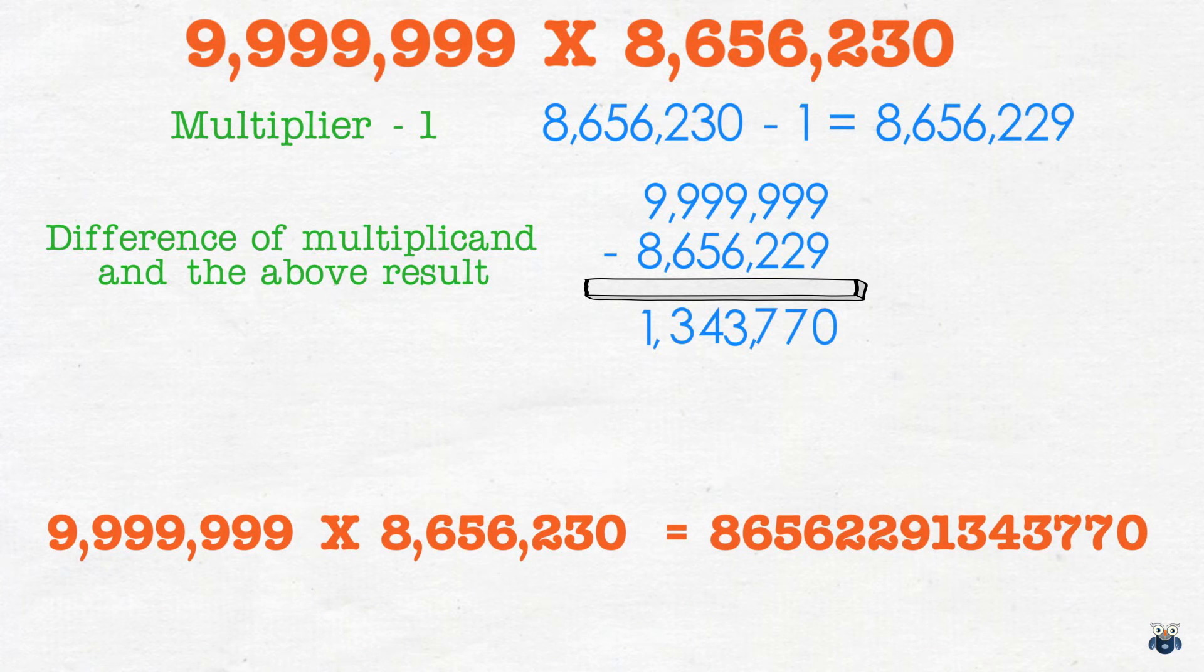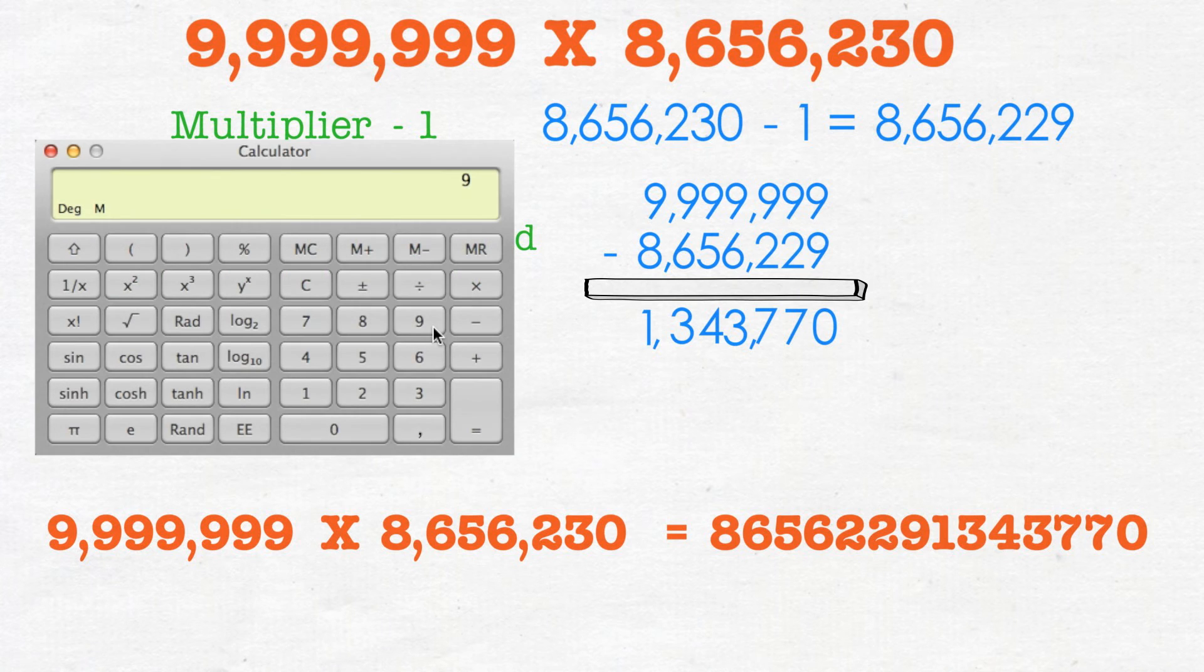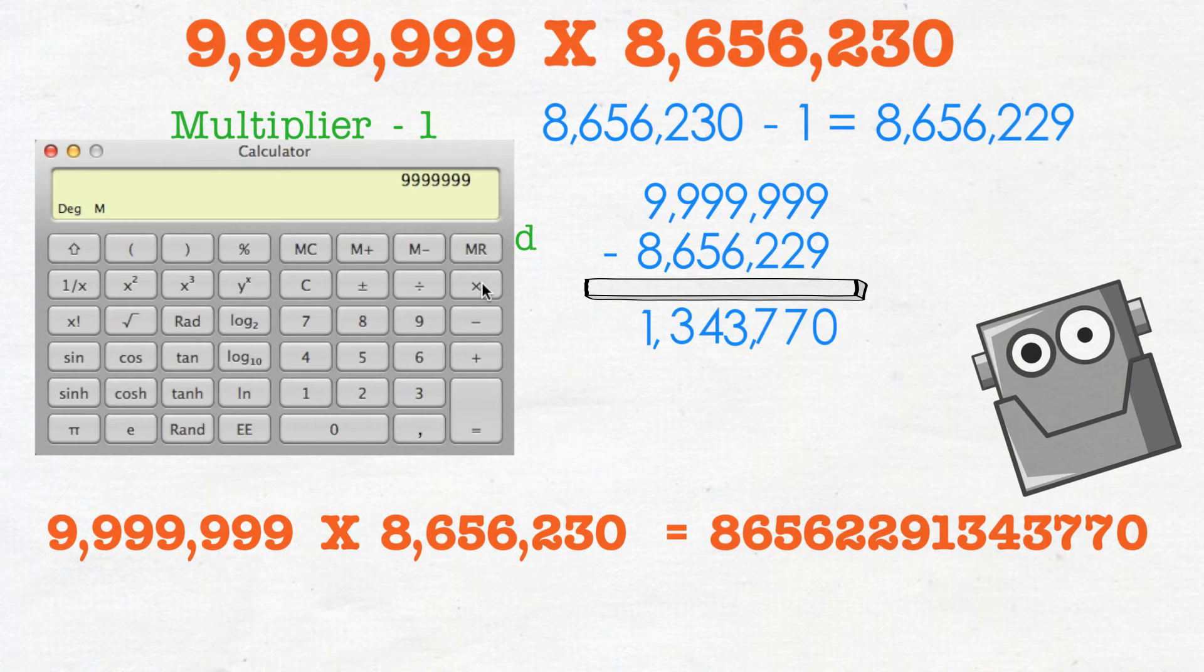And combining the two together we get this mammoth answer 8,656,291,343,770. Now let's validate our result. I am not sure if a standard calculator will give us such a large answer. Let's check it out. Great that worked.